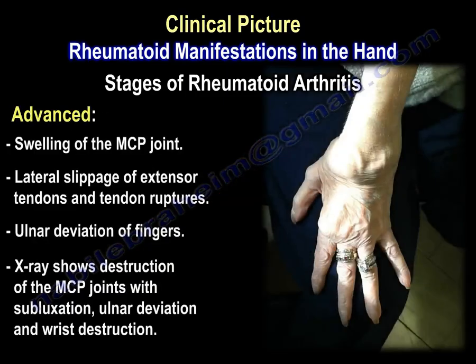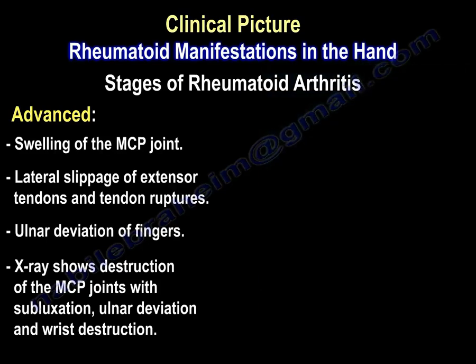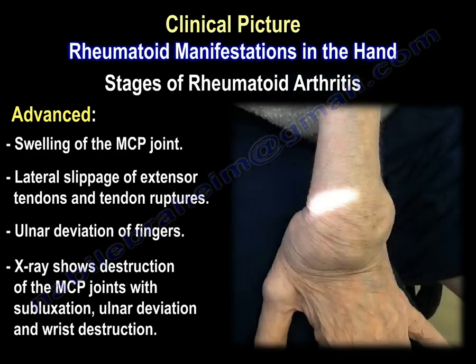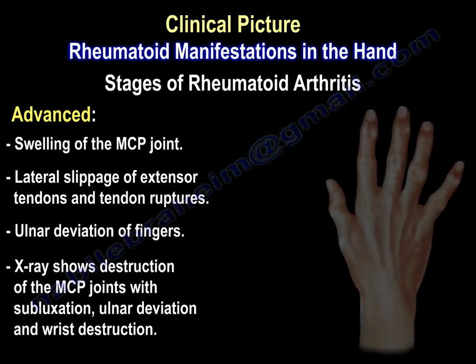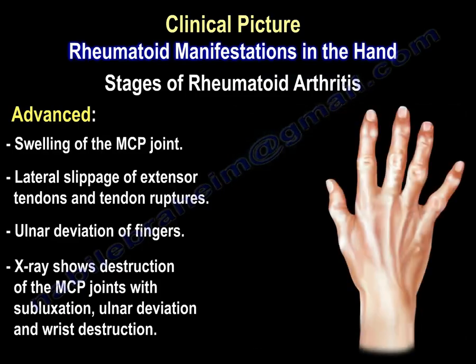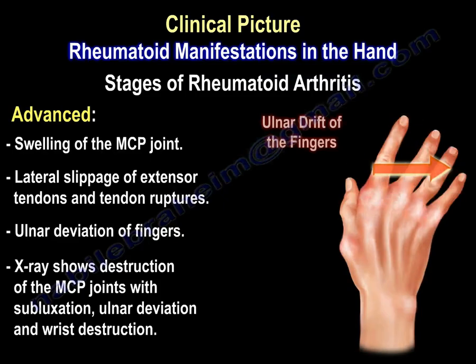In advanced disease, there is swelling of the MCP joint, lateral slippage of extensor tendons and tendon ruptures, and ulnar deviation of the fingers. X-ray shows destruction of the metacarpophalangeal joints with subluxation, ulnar deviation, wrist destruction, and ulnar drift of the fingers.